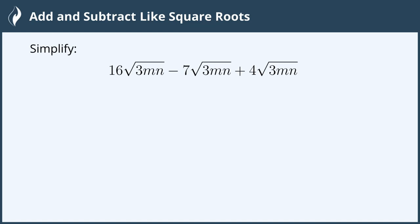Hi everyone, in this video we are going to add and subtract like square roots. Simplify: 16√3mn - 7√3mn + 4√3mn.